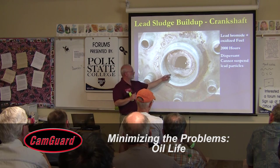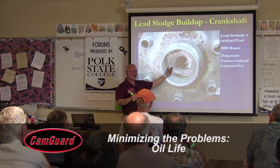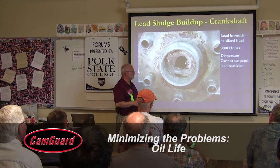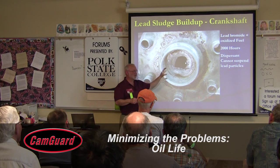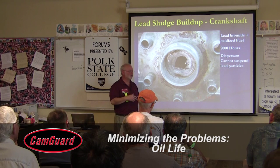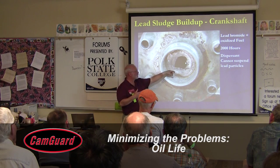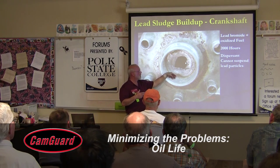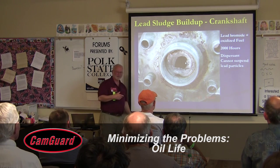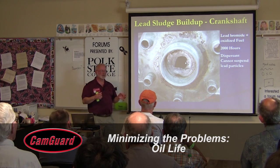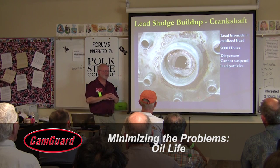Here's an example of that lead butter sludge — you can scoop it out with a knife. It's very heavy because it contains so much lead. It's found throughout the engine, usually in the low-flow areas of the oil pan. This is centrifugal force throwing it out inside the hollow crankshaft as oil flows through and separates it out. It can cause a lot of problems, including stuck oil control rings.